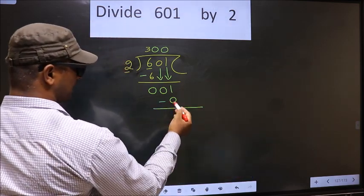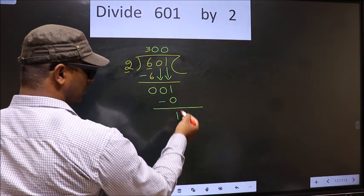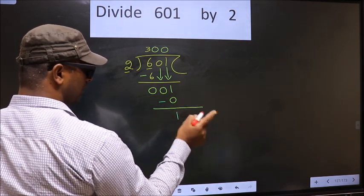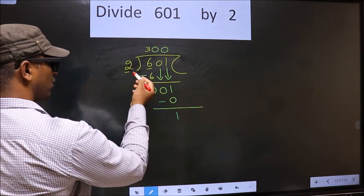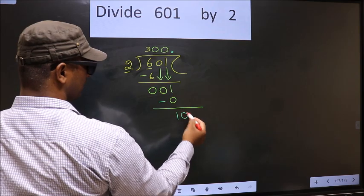Now you subtract. 1 minus 0, 1. Over here we did not bring any number down. And 1 is smaller than 2. So now you can put a dot, take 0 here.